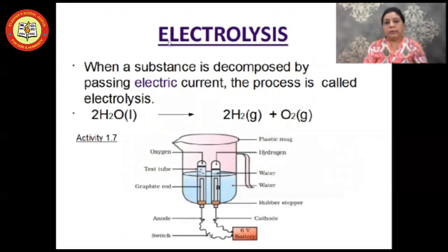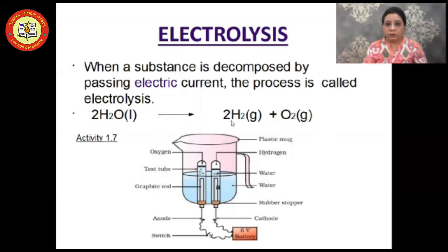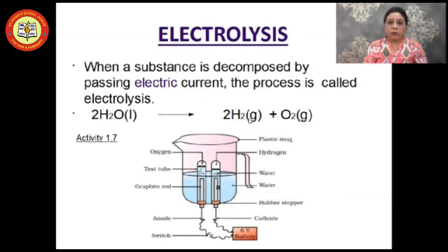The next type of decomposition is electrolysis — decomposition which takes place by passing electric current. For example, when electric current is passed through water, it breaks down into H₂, that is hydrogen gas, and oxygen gas. In Activity 1.7 you can see the figure of the electrolysis process: a plastic jug with two electrodes connected to a 6-volt battery. When current passes, water molecules decompose into hydrogen gas and oxygen gas.